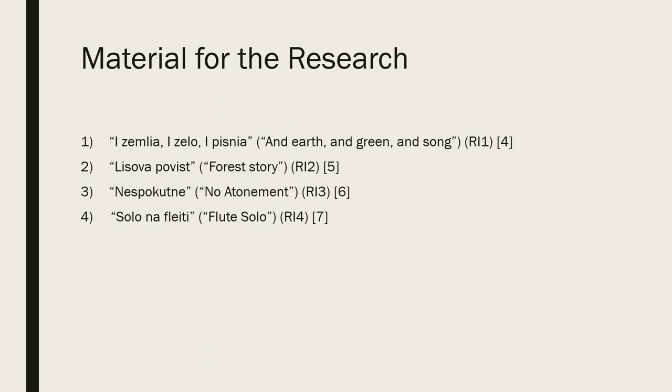The material for the research is the following novellas of Roman Ivanychuk: And Earth and Green and Song, further in the text this novella will be referred to as RI1. First Story, RI2. No Atonement, RI3. Thut Solo, RI4.